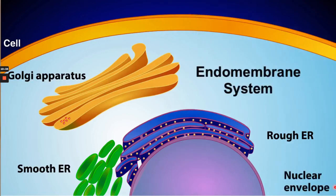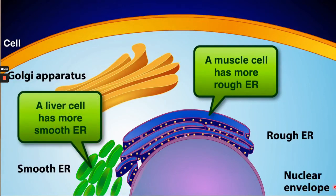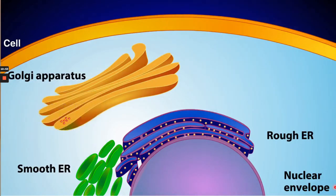The endomembrane system can be modified slightly to meet the specific needs of each cell. For example, a muscle cell usually has more rough ER because of its need for protein, while a liver cell usually contains more smooth ER because of its role in detoxification. Regardless of these modifications, the movement of materials within the endomembrane system is basically the same for all eukaryotic cells.